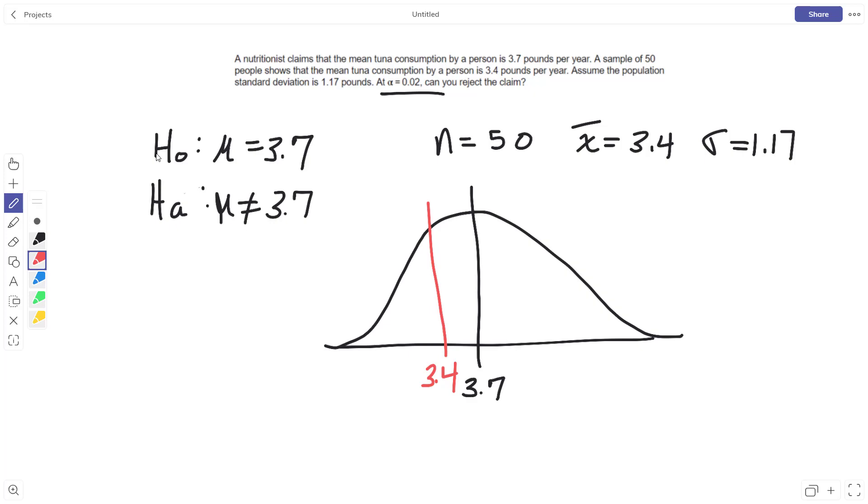So what I'm going to have to do then is do my z-test, where I'm going to take my sample mean minus the null divided by the standard deviation over the square root of the sample size. And when I do that, I get negative 1.81.